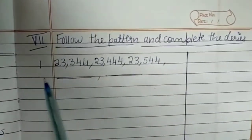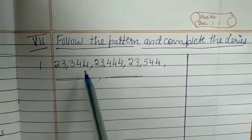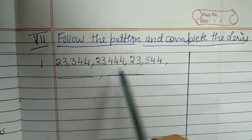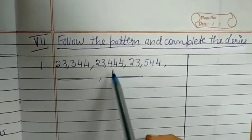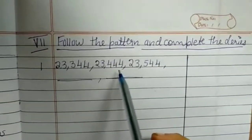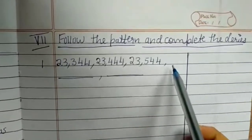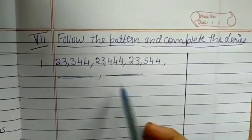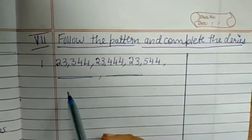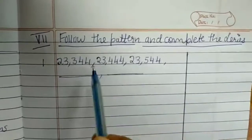The first number is 23,344. Next is 23,444. Then 23,544. We need to find out the other two blanks, so let's see what to do now.